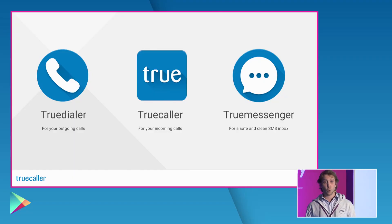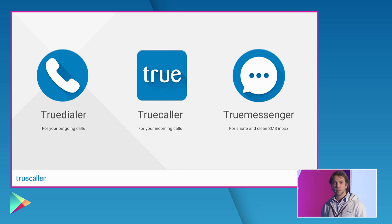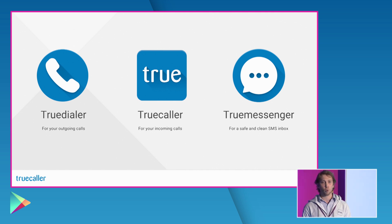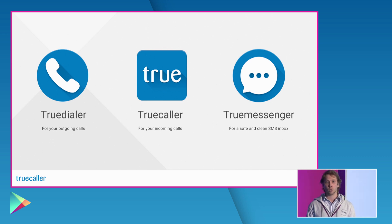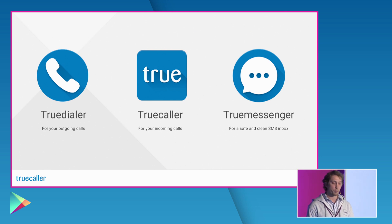Truecaller is a Swedish startup headquartered in Stockholm and we have three main products. Truecaller is an application that allows you to discover in real time who is calling you even if you don't have the number in your phone book. It blocks calls from top spammers of your region and it allows you to always have access to the right information, people and businesses when you need them.